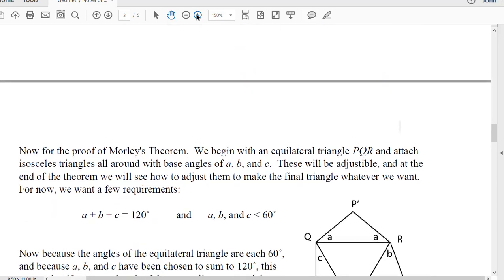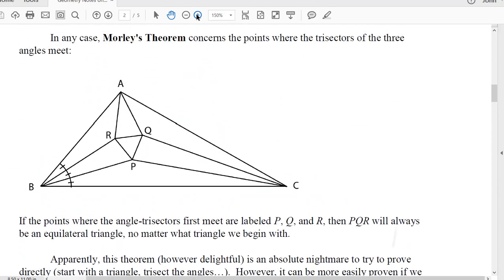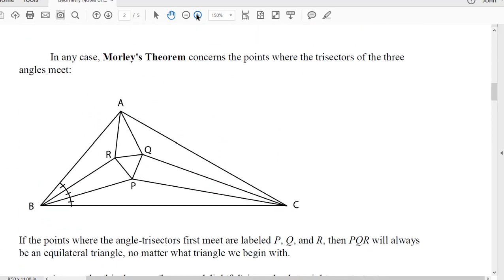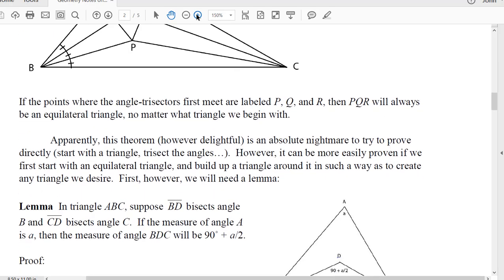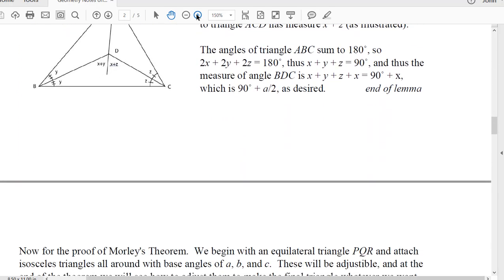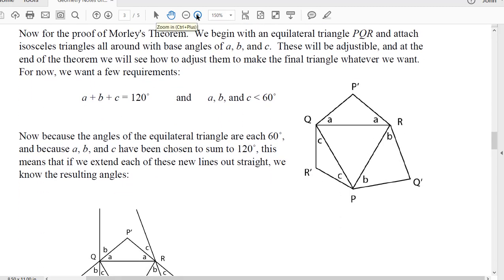So the trick is we do not begin by taking a triangle, trisecting all the three angles, and then finding out where they meet. Instead what we do is we work backwards. We start with an equilateral triangle, PQR. I don't indicate that it's equilateral, but it is.